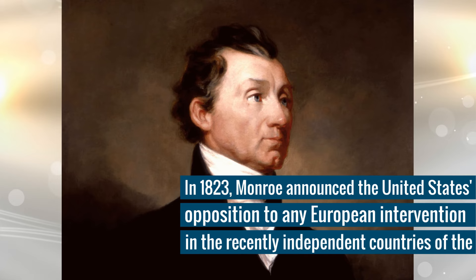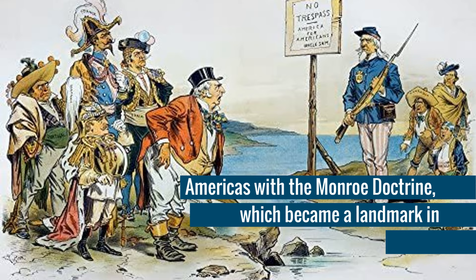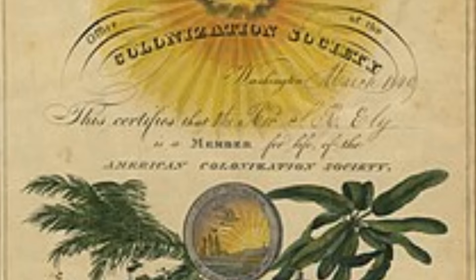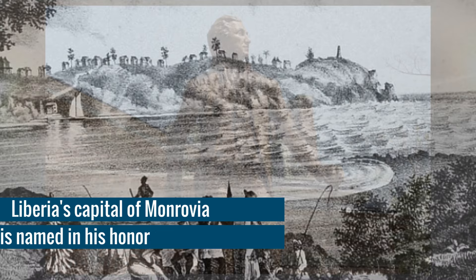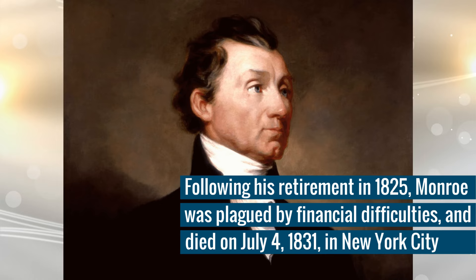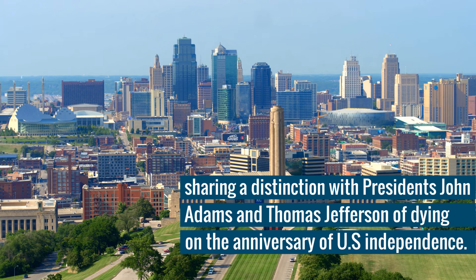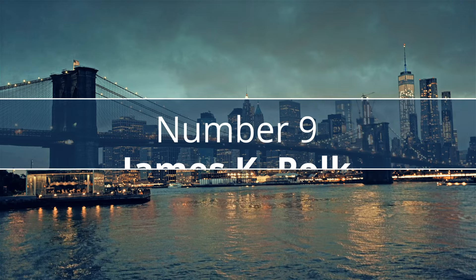In 1823, Monroe announced the United States' opposition to any European intervention in the recently independent countries of the Americas with the Monroe Doctrine, which became a landmark in American foreign policy. Monroe was a member of the American Colonization Society, which supported the colonization of Africa by freed slaves, and Liberia's capital of Monrovia is named in his honor. Following his retirement in 1825, Monroe was plagued by financial difficulties and died on the 4th of July 1831 in New York City, sharing a distinction with presidents John Adams and Thomas Jefferson of dying on the anniversary of US independence.